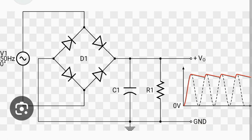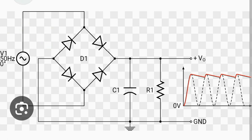This sinusoidal waveform has positive and negative cycles of oscillation at 50 Hertz. During the positive half cycle, the voltage polarity at the two input points becomes positive and negative as shown. With this polarity, one diode has a positive voltage at its anode and another diode has a negative voltage at its cathode.